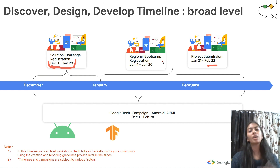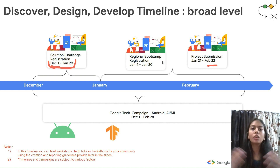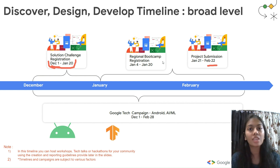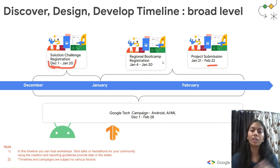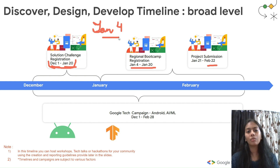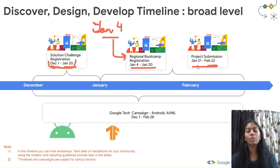Regional bootcamps help you get expert guidance to produce an efficient solution. Google's experts will tell you what to add and what changes to make so your project can reach the top 100 globally. Bootcamps are held between January 4th and January 20th — try to register before January 4th so you can apply. Project submission runs from January 21st to February 22nd.